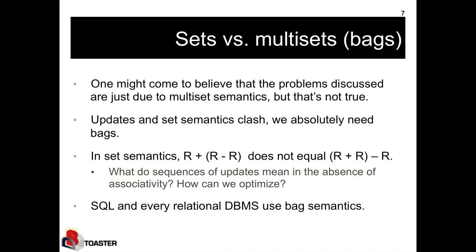And that's actually not possible in set semantics. Here's an example. Suppose I would like to take R as a relation, the database, the view, and I would like to insert another copy of R, and then I would like to subtract R. I can do this in two ways. First, I could pull the two updates together, the insertion and the deletion, and they cancel each other out. That means it's a no operation, and what you have in the result is still R.